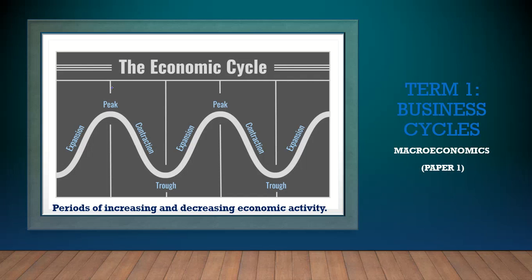If we look closely at the graph, the highest point on a business cycle is a peak. When the economy is doing very well it will be at its peak. The lowest point of a business cycle is a trough, right there at the bottom.